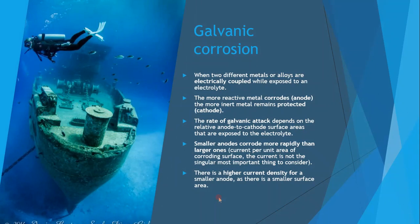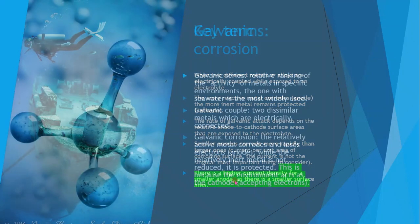Galvanic corrosion occurs when two different metals or alloys are electrically coupled while exposed to an electrolyte. The more reactive metal corrodes — the anode — and the more inert metal remains protected — the cathode. The rate of galvanic attack depends on the relative anode-to-cathode surface areas. Smaller anodes corrode more rapidly than larger ones because there is a higher current density for a smaller surface area.